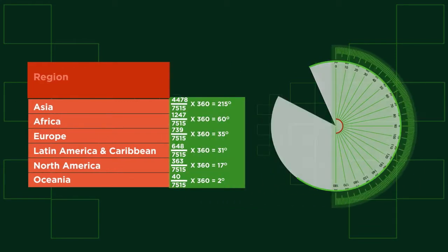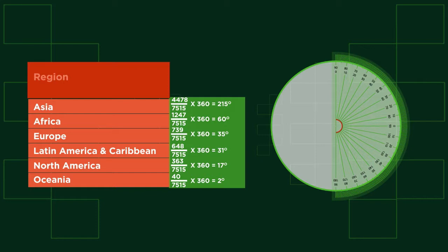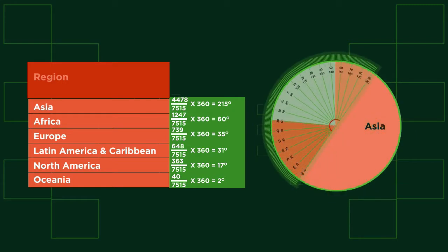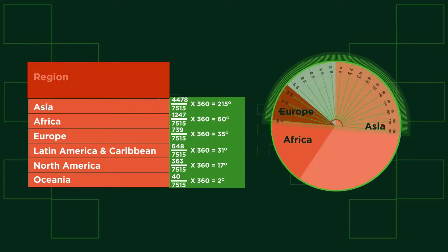With your protractor, you can now divide your pie chart up by these degrees. Starting from the vertical, measure 215 degrees clockwise and label this sector Asia. Then measure 60 degrees and label it Africa. 35 degrees for Europe. And then finishing off the last three.